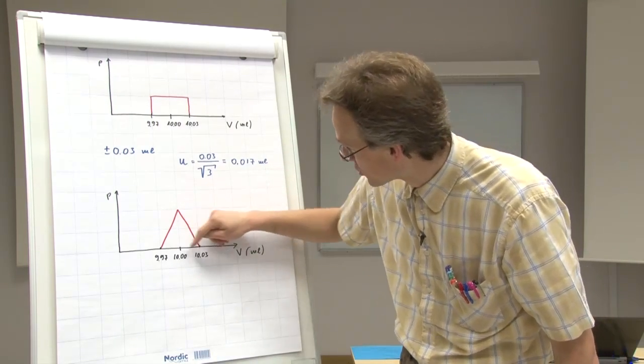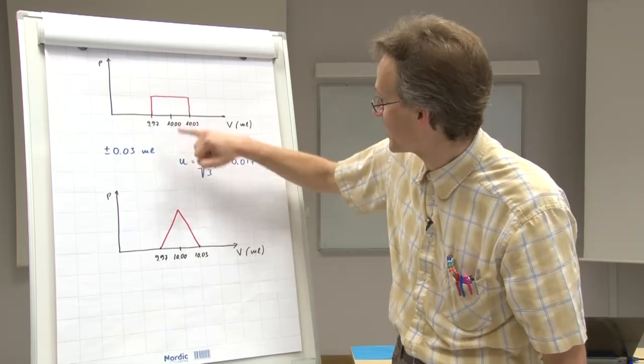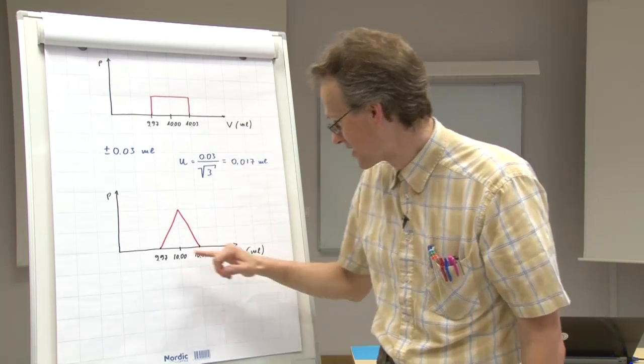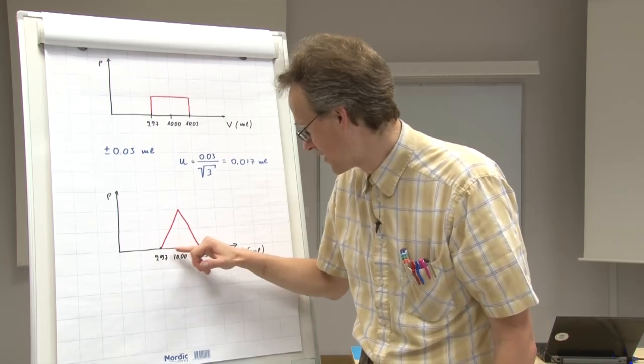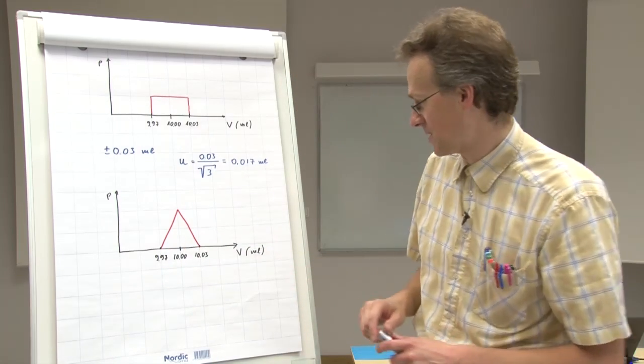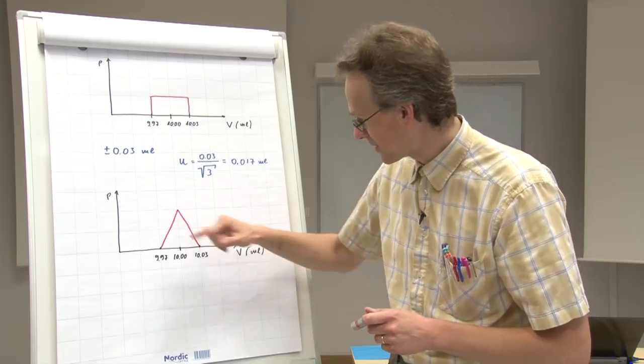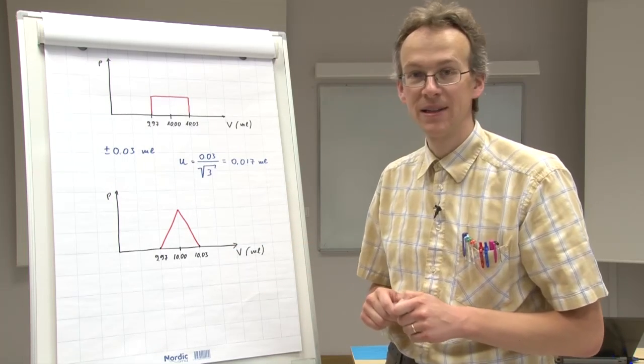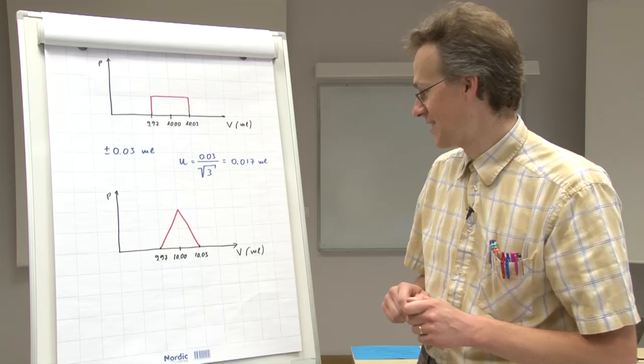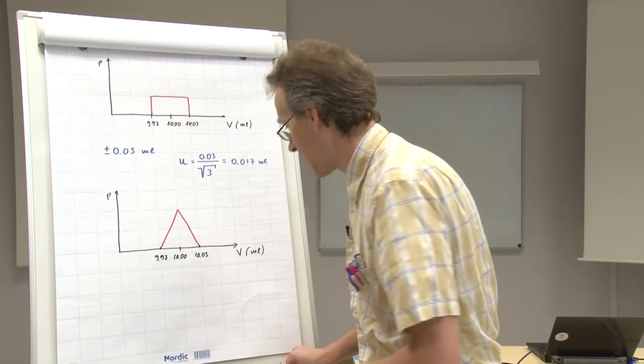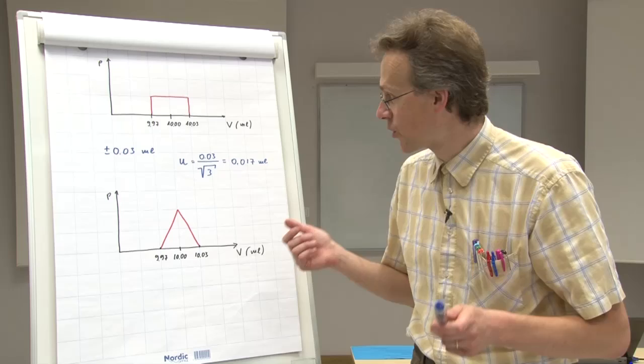I deliberately have drawn it such a way that the areas under these two curves are equal. So in both cases, the probability of being within this range is 100% and being outside here is zero. But in this case, as I said, the probability of being near 10 is higher than away from it. And how do we convert now?